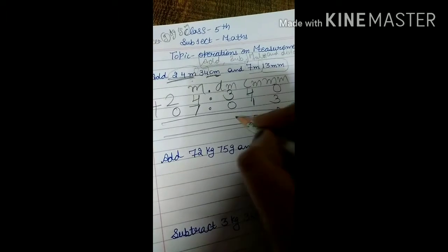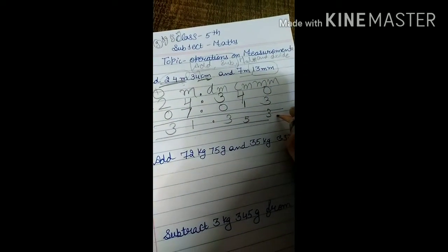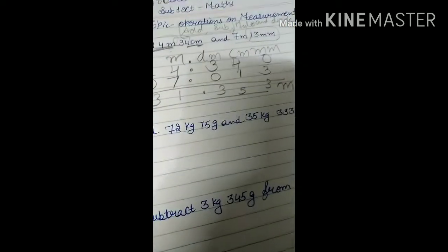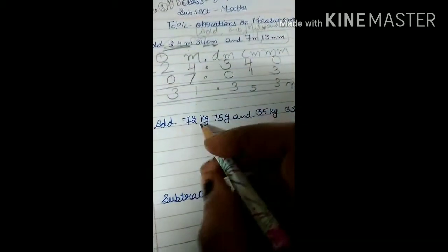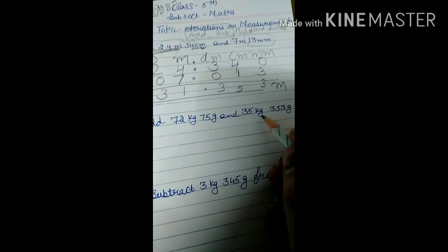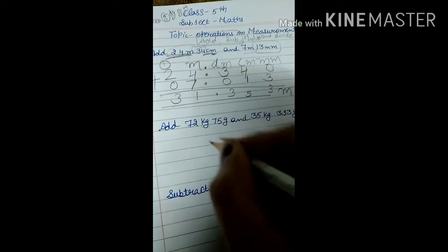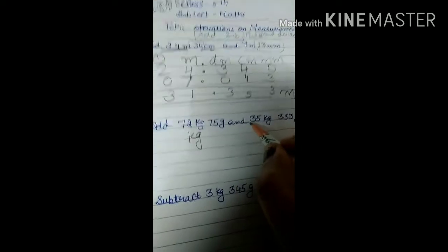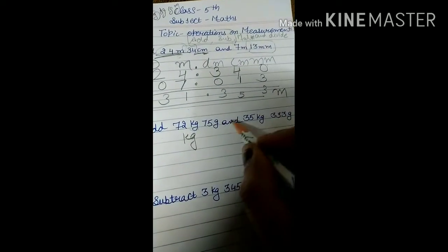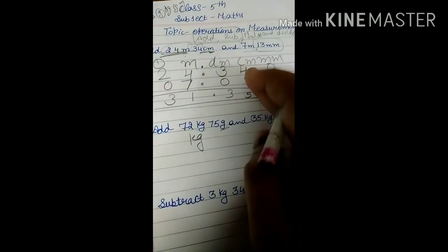Adding: 4 plus 3 is 7, 5 plus 1 is 6... the required answer is 31.353 meters. Same method applies for the next example: 72 kg 75 g, 35 kg 333 g. The biggest unit is kilogram, so write kg first. Write up to the smallest unit, which is gram.